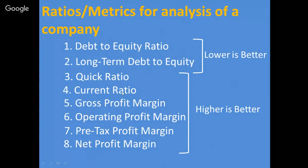یہ چار profitability ratios جو ہیں ان میں کوئی doubt نہیں ہے۔ باقی ratios پر لوگ debate کرتے ہیں کہ اتنی زیادہ نہیں ہونی چاہیے، اتنی کم نہیں ہونی چاہیے — وہ debatable ہے۔ لیکن ہم اپنی analysis کے لیے industry کے ساتھ comparison کریں گے اور پھر decision لیں گے۔ یہ clear ہے کہ پہلے دو ratios کم سے کم ہونے چاہیے — lower is better۔ یہ ہو گیا profitability کے اوپر — thank you very much for watching this video، اللہ حافظ۔